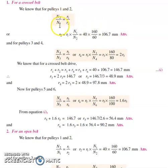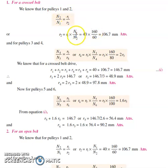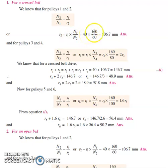The ratio of speeds n2/n1 equals r1/r2. We have n1 and n2 speeds given, and the radius r1 of the smallest pulley is provided. We don't need to convert mm to meters or adjust rpm units — we simply substitute all values and calculate the radius r2 as 106.7 mm.